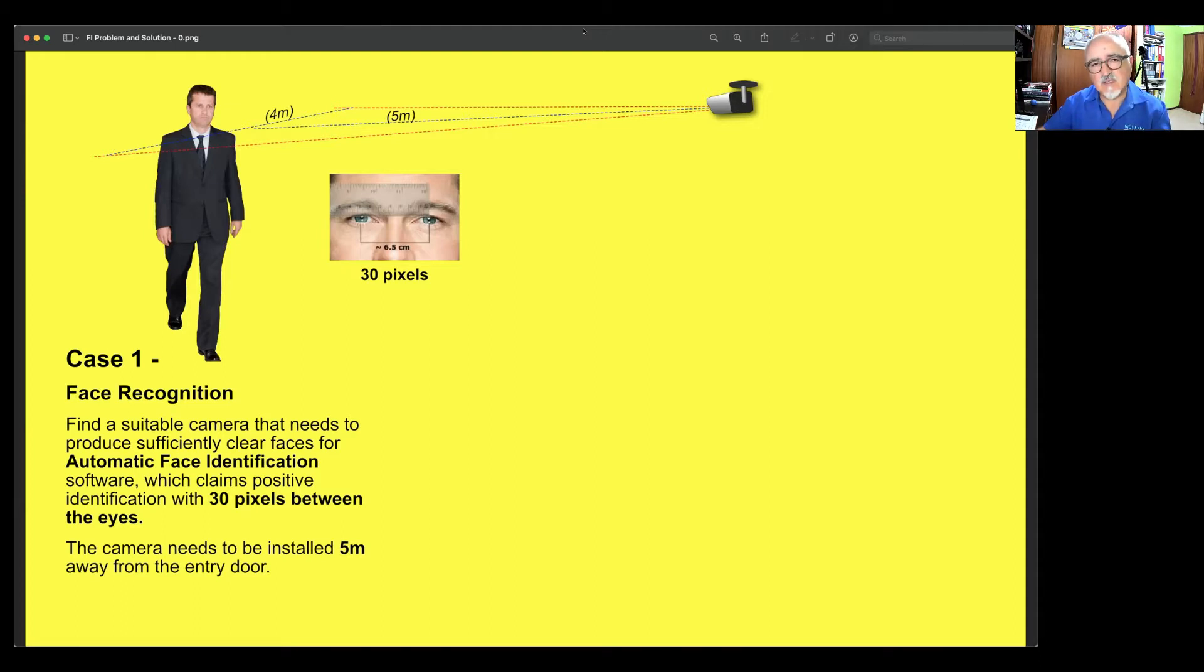In this case, let's assume this is a practical exercise where we need to install the camera five meters away from the place where we need to identify these people walking through the corridor perhaps or coming from the door or maybe coming out of the lift. In any case, we know that the camera needs to be installed at five meters away.